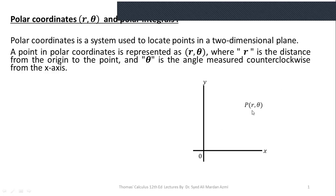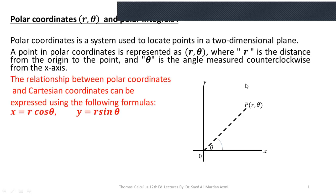Here you can see: if this is point P, then r is the distance of this point from the origin in a straight line. In order to calculate θ, we make an arc with this line, and this arc provides you the angle θ in polar coordinates. The relationship between polar coordinates and Cartesian coordinates is: x = r cos θ and y = r sin θ.